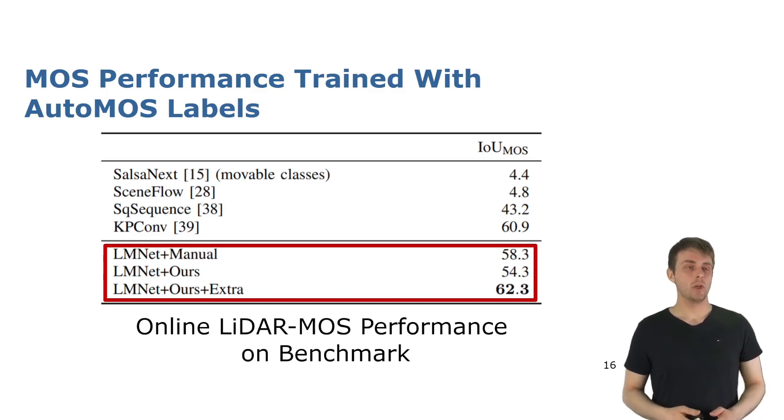In the third row below you can see the result of using a setup where we additionally add extra training data from different domains where we also infer the labels with our approach. This boosts the results and improves upon the manual labels showing that extra data automatically labeled can improve the LiDAR MOS performance.